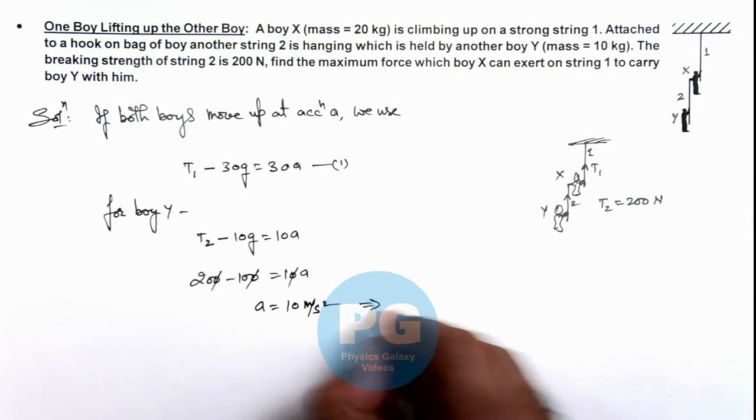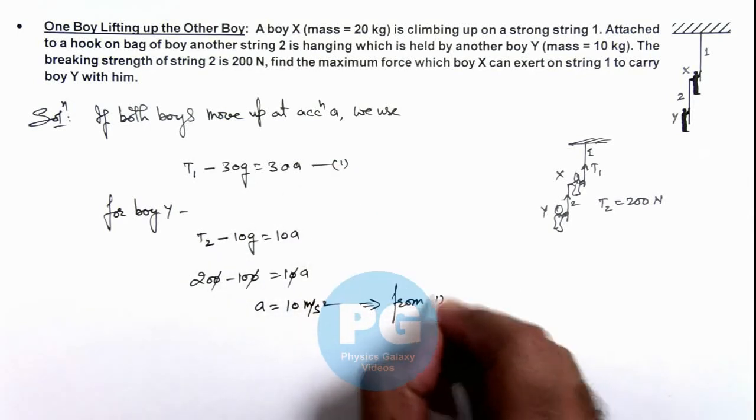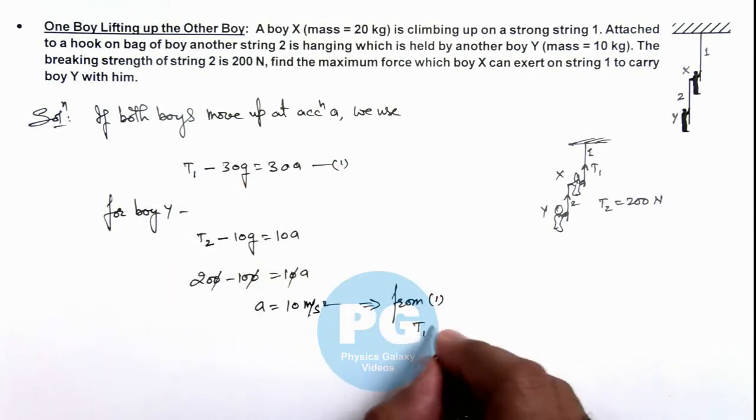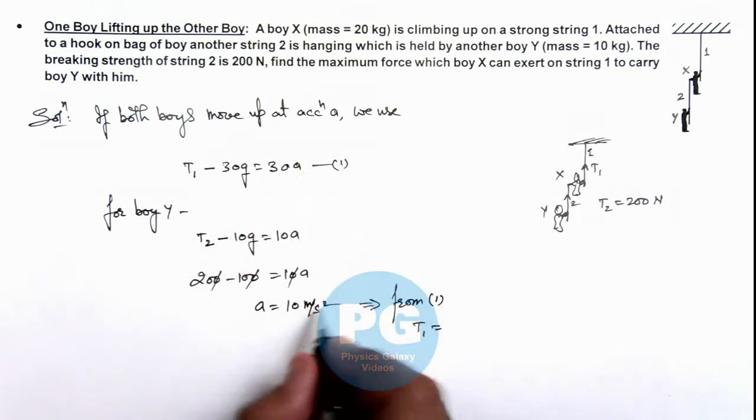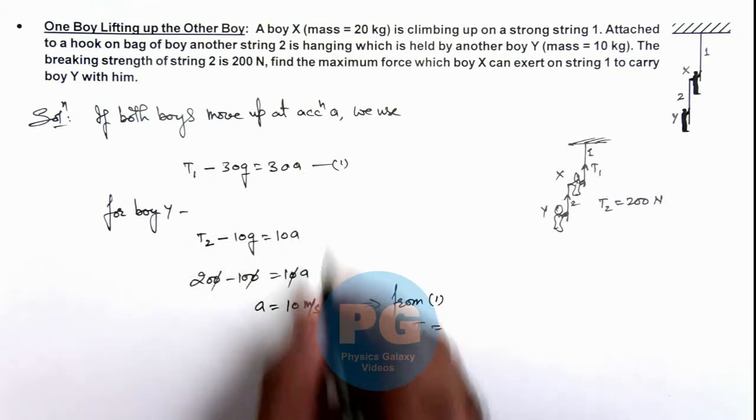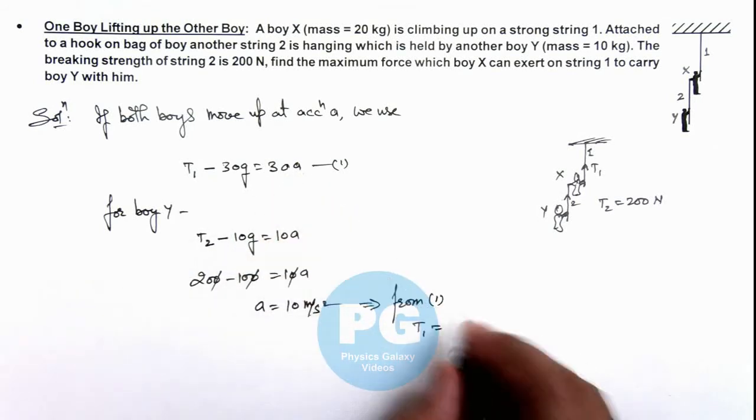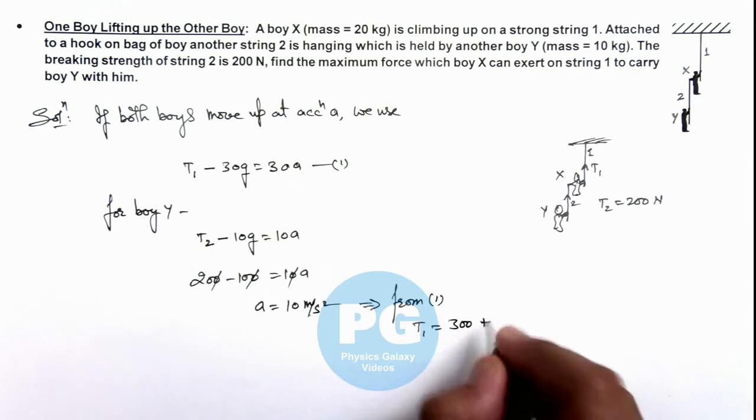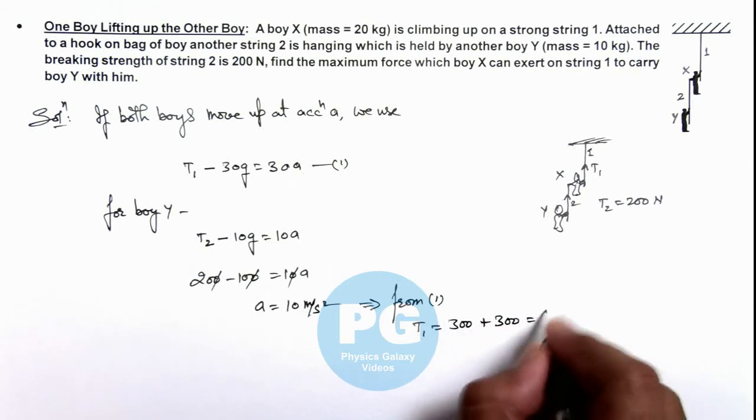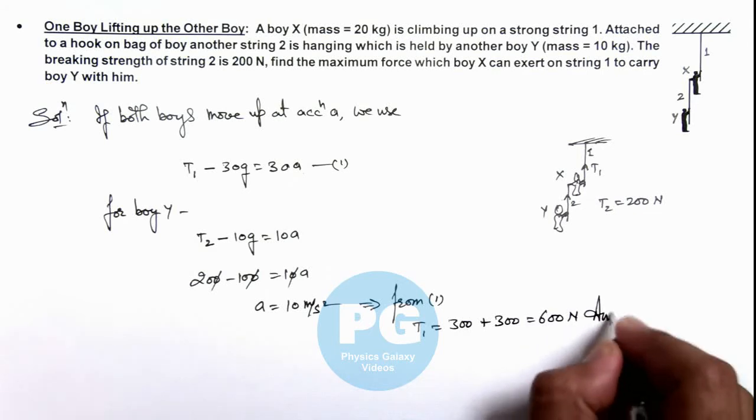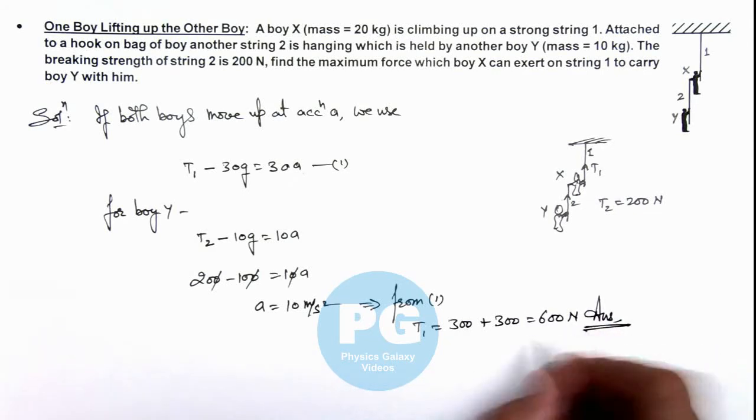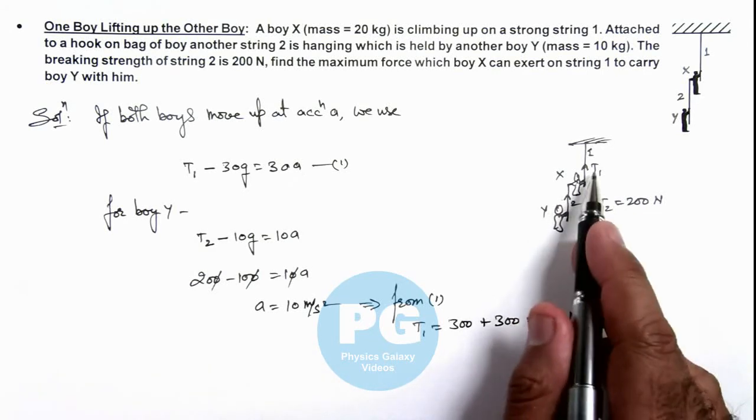This implies if we use equation 1, here we can see the value of T1 is equal to 30ay. If we take ay as 10, this will be 300 plus 30g, that is 300, is equal to 600 newtons. That is the final result of the problem. This much force the Boy X has to exert on string 1.